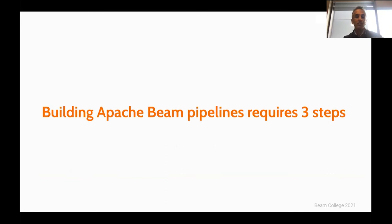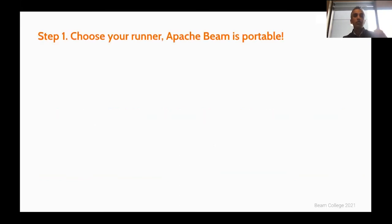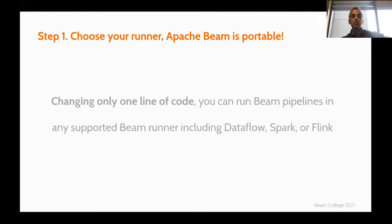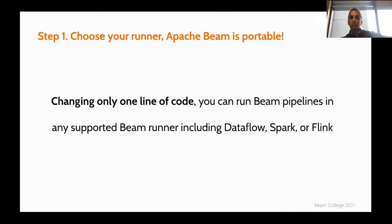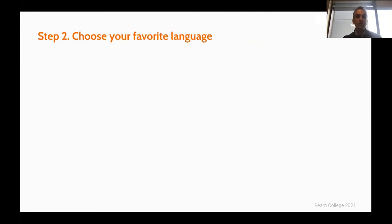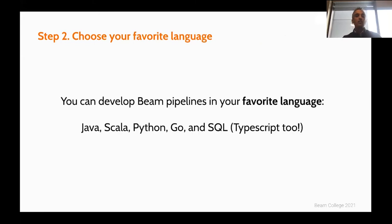It only requires three steps in Apache Beam pipeline generation. Step one: choose your runner. Beam is portable — you can use Dataflow, which is a Google Cloud managed service; Spark, a very popular open source runner; Flink, another popular open source runner; or other runners like Samza, or even build your own. Step two: use your own language — Java, Scala, Python, Go, SQL, and TypeScript experimentally in your favorite languages.